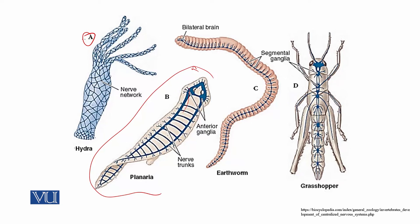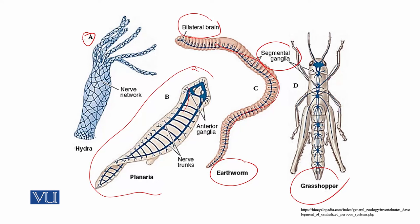Next is Annelida, represented here by the Earthworm. In Annelida, the nervous system consists of a bilateral brain, a ventral nerve cord and segmental ganglia. Next is Arthropoda, which has more elaborated sensory organs.